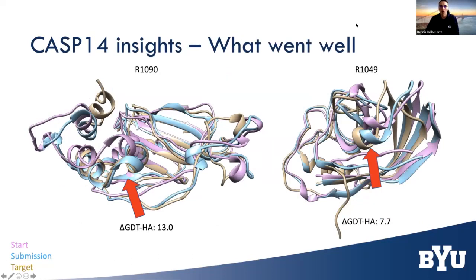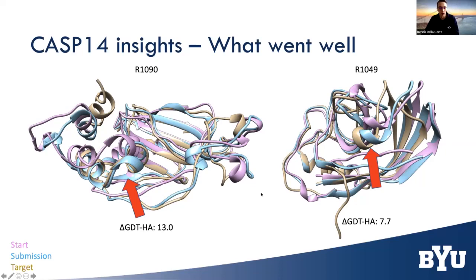Here are some insights into what went well. We overlay three structures: pink is the start structure, gold is the experimentally solved target structure, and blue is our refined output. For example, a start alpha helix was moved into the target position. Similarly, another pink alpha helix was moved closer to the target. The type of refinement we normally see is moving secondary structure elements into the right spot.